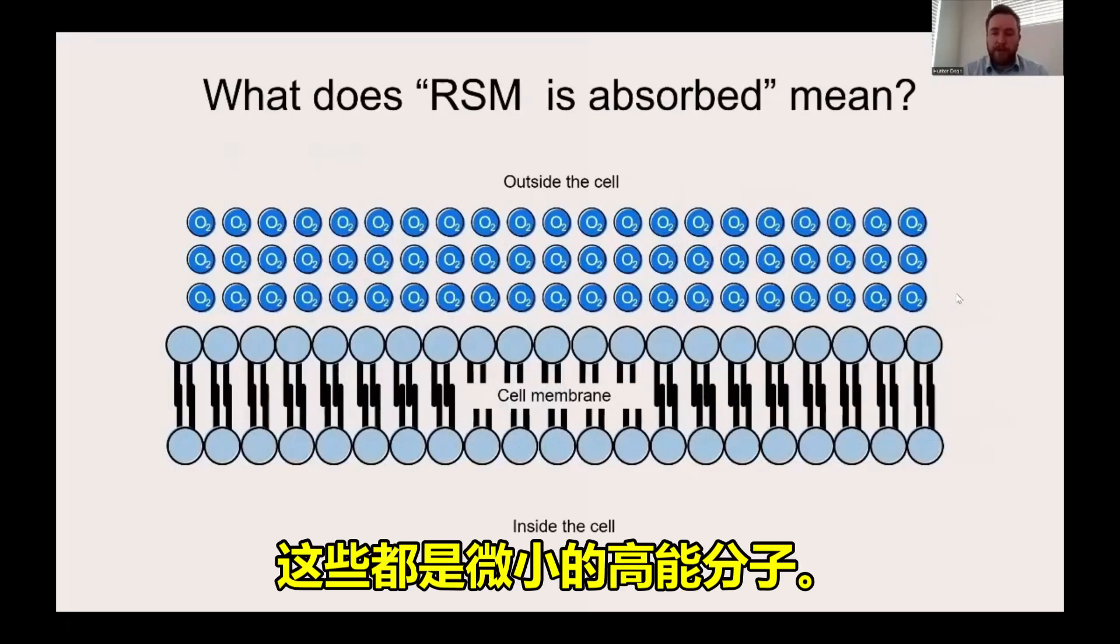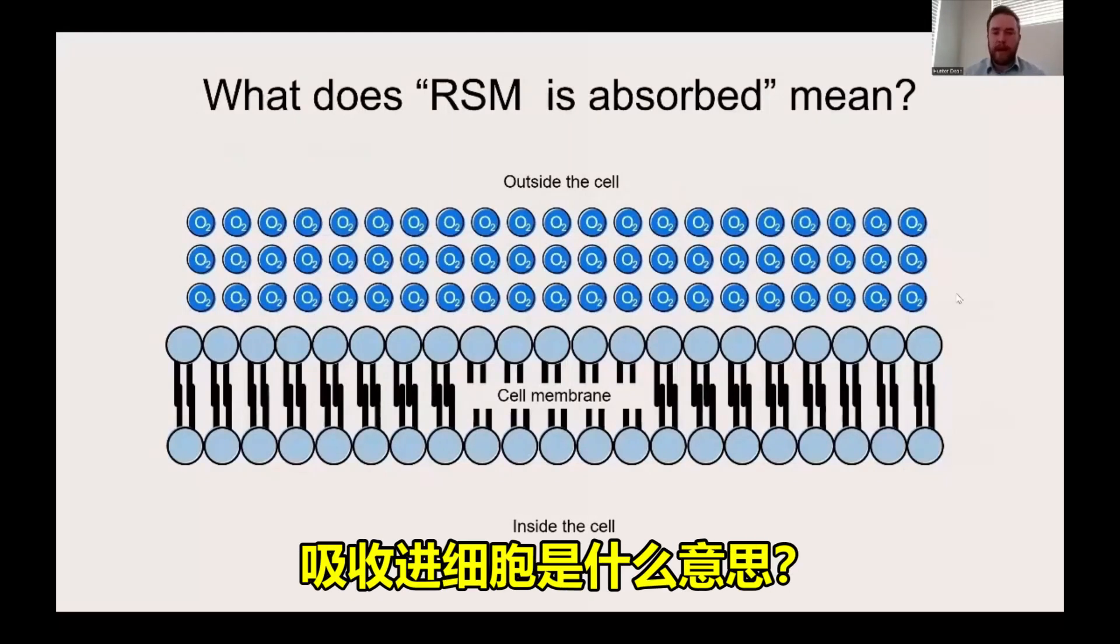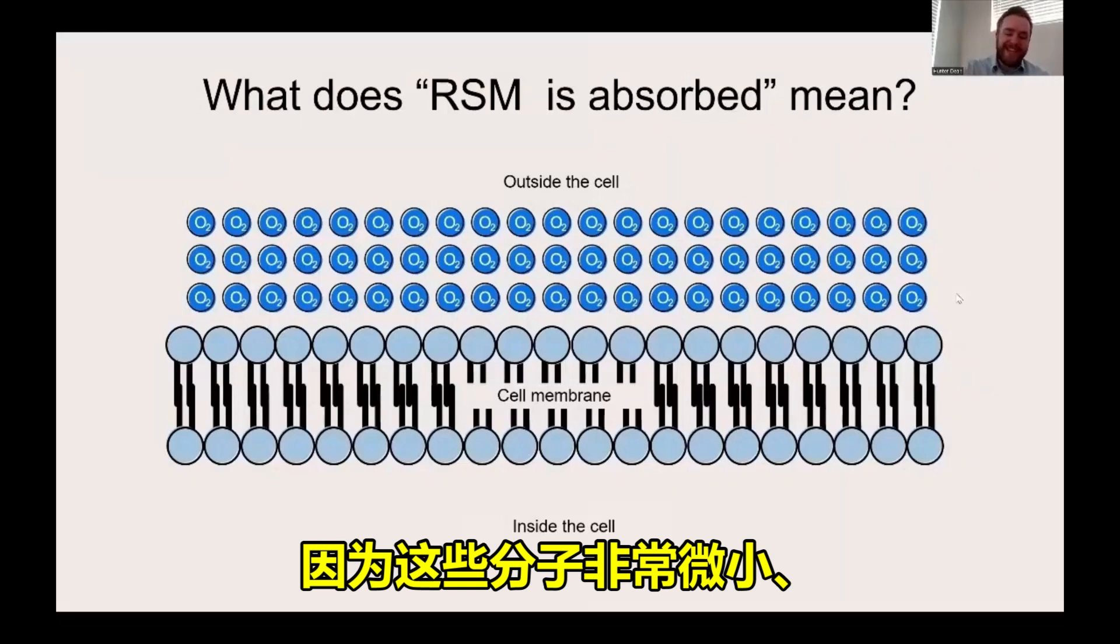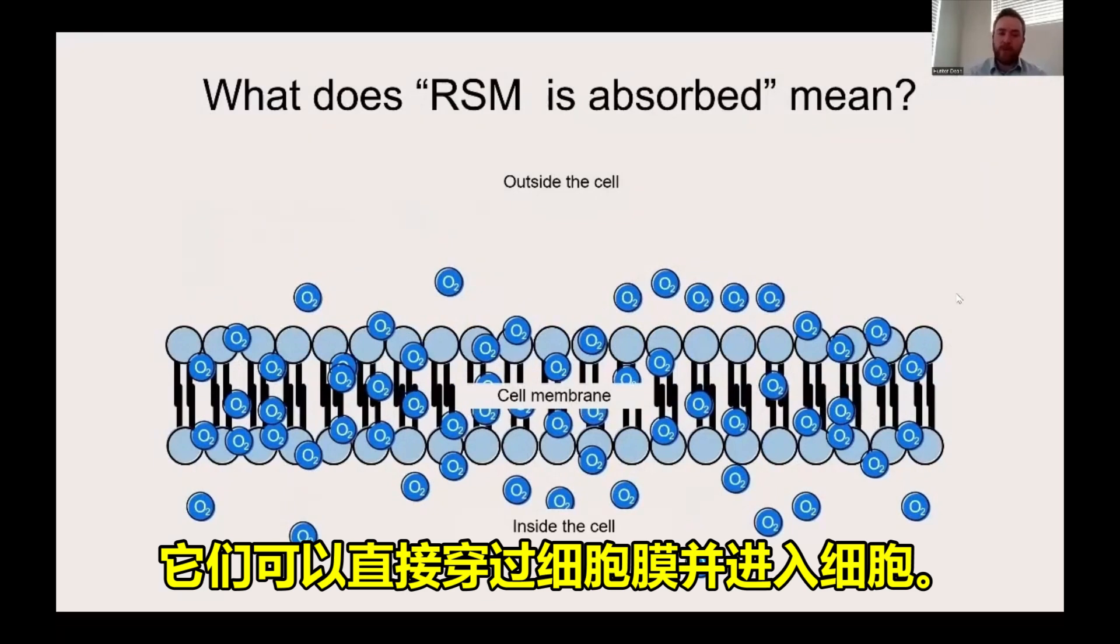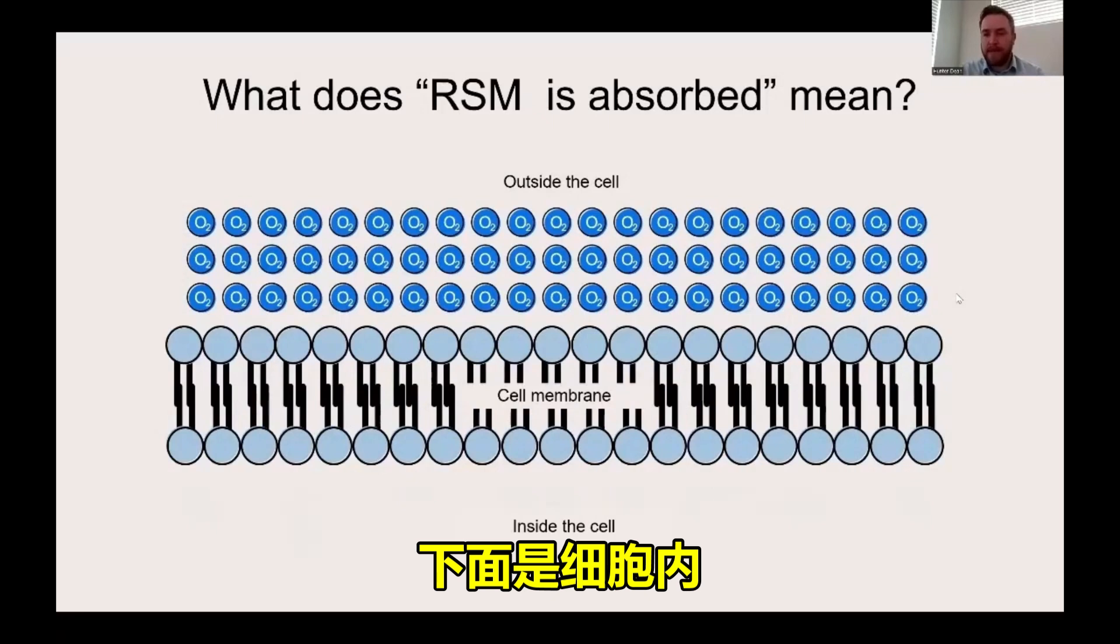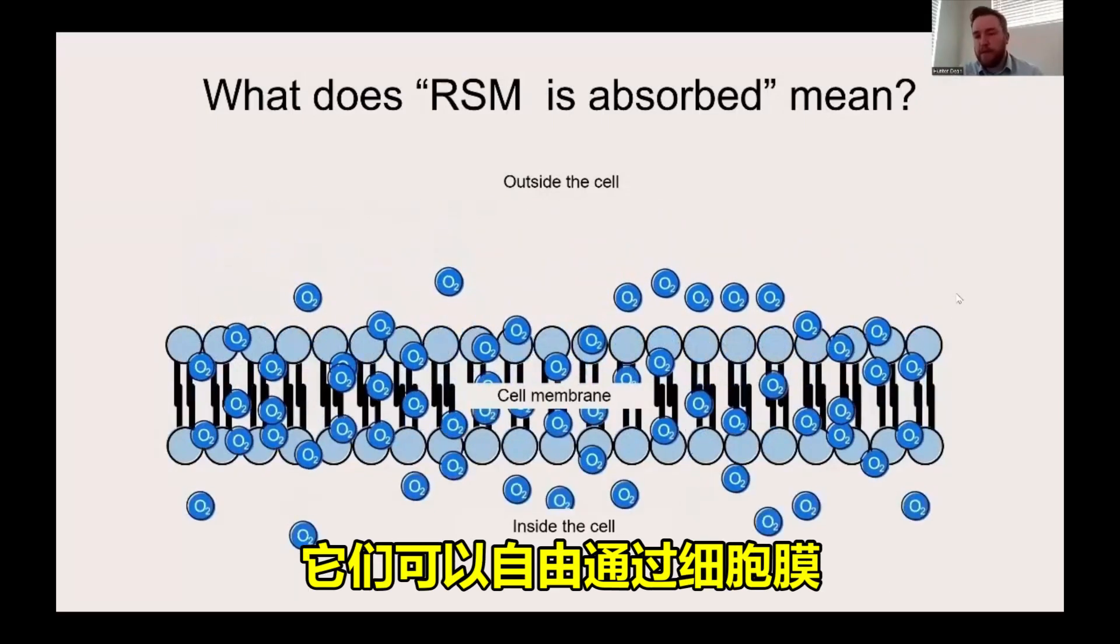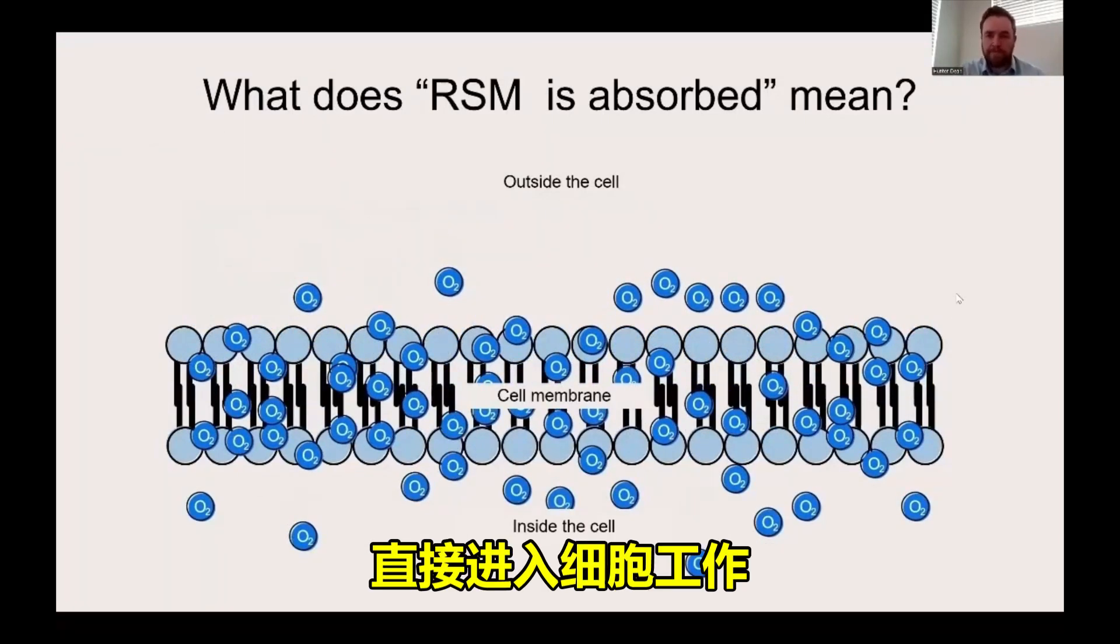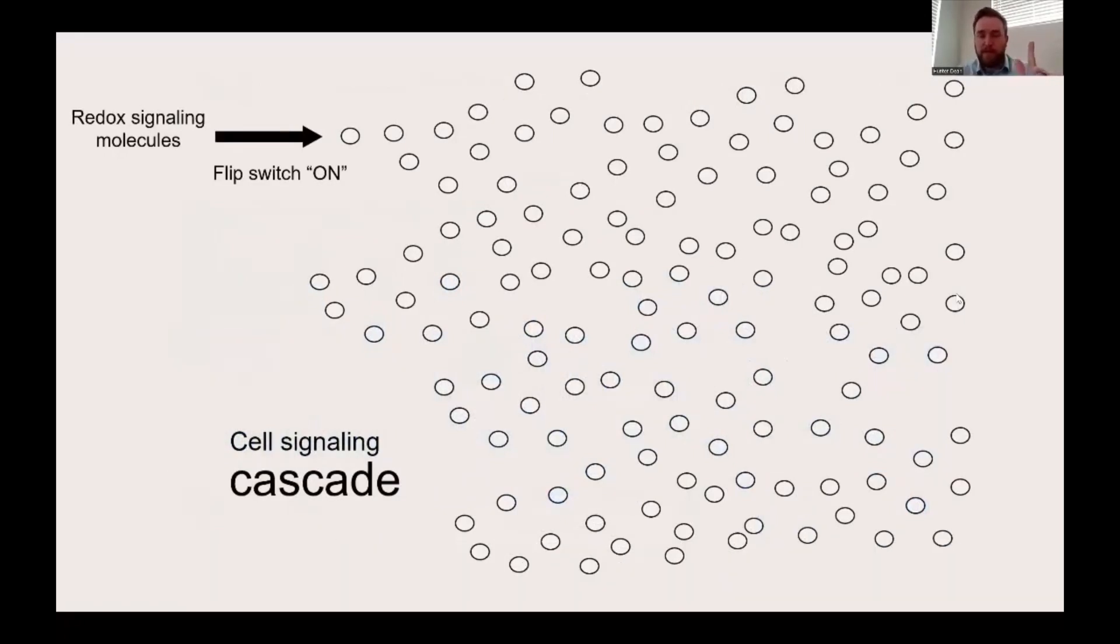Now, we're going through the keywords here. So these are tiny, high-energy molecules. Because they are tiny, they can be absorbed into the cell. What do we mean by absorbed into the cell? Well, because these molecules are so tiny, they can pass straight through the cell membrane and into the cell. So here you have on the top, outside the cell, and then on the bottom is inside the cell. Because these molecules are so tiny, they don't need permission to enter the cell. They can pass freely through the cell membrane, where they can go straight to work.